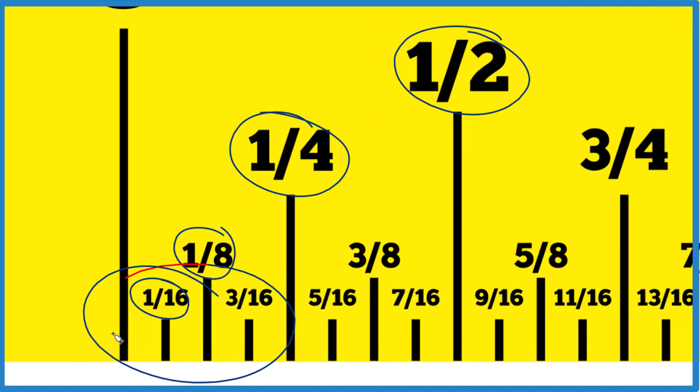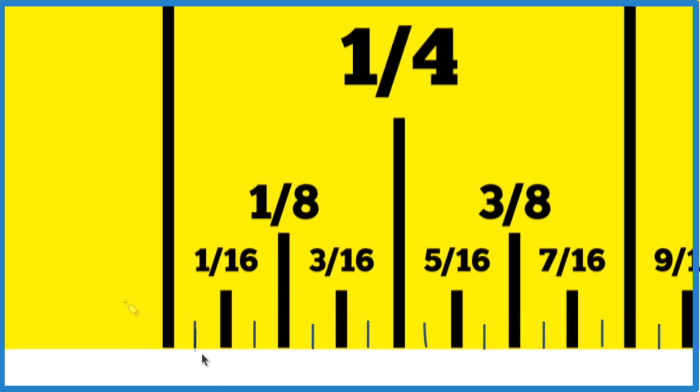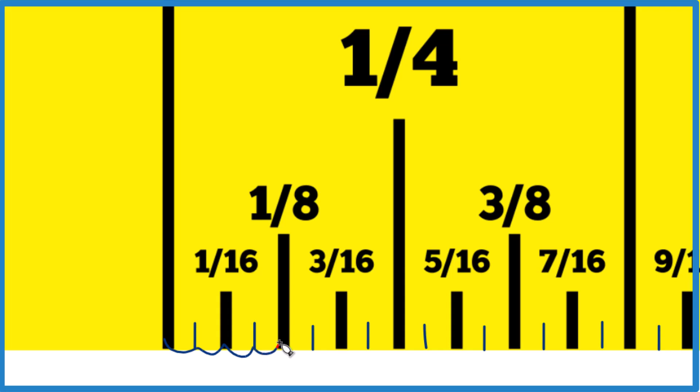Let's zoom in on this area right here though. So we could cut the one-sixteenth in half. That would give us one thirty-second. So we'd have one thirty-second, two thirty-seconds, three thirty-seconds, four thirty-seconds, five thirty-seconds, and so on.